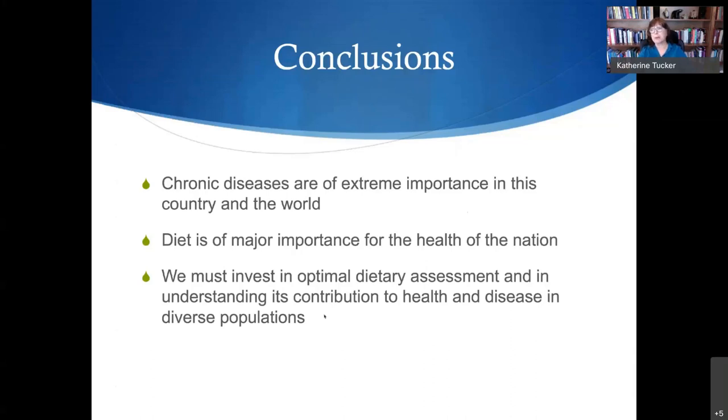In conclusion, chronic diseases are so widespread and causing so much health risk and early mortality that they cannot be ignored, and the role of diet cannot be ignored for the health of the nation and the world. We're moving forward but we need more investment in improving optimal dietary assessment and in combining it with other measures to truly understand health and disease — not only in the majority but in diverse populations.